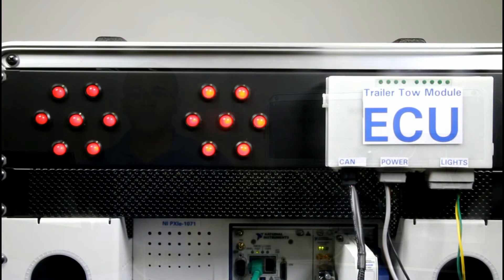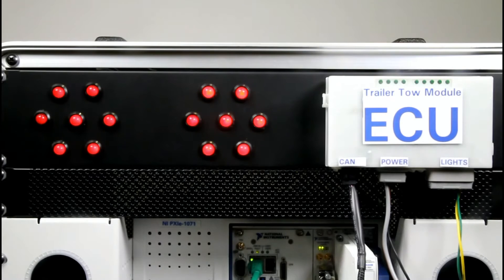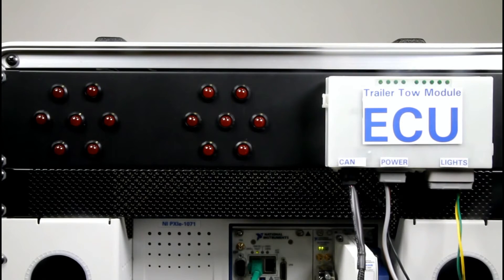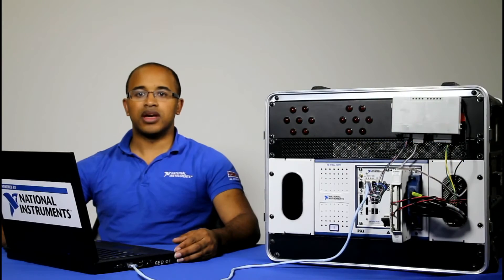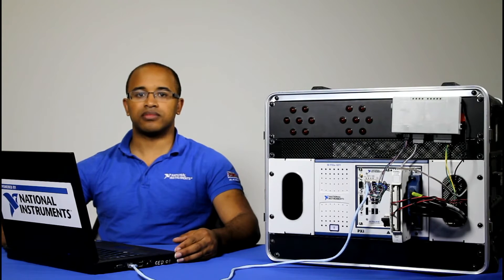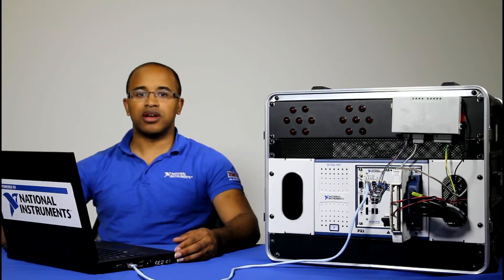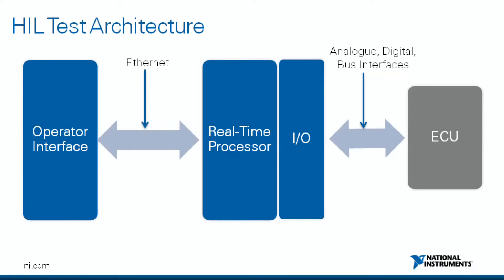The unit you see here controls the lights on a trailer. However, there are a variety of considerations, such as safety, availability, and cost, which make it impractical to perform all of the tests using a complete system. To overcome these impracticalities, a hardware-in-the-loop real-time simulation, also known as HIL, can be used.